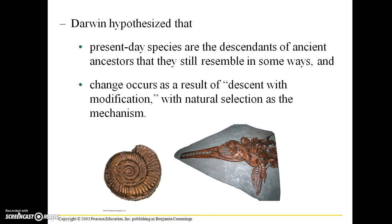Darwin hypothesized that present-day species are the descendants of ancient ancestors that they still resemble in some ways, and that change occurs as a result of a process in which generations beget generations that are modified in some way. He called this descent with modification, and he proposed a mechanism to explain how that descent with modification works, which is natural selection.